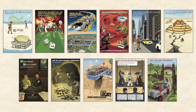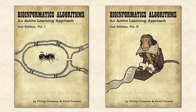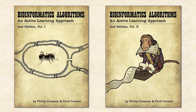Dr. Pavel Pevsner is a distinguished professor of computer science at the University of California San Diego and a leading authority on bioinformatics. He's dressed this way because he sometimes thinks that he's a sheriff of bioinformatics, a frontier discipline underpinning the digital revolution in biology and personalized medicine. Dr. Philip Campo is an assistant professor of computer science at Carnegie Mellon University. To learn why he is dressed this way, you'll need to take this course or read the textbook, Bioinformatics Algorithms: An Active Learning Approach, co-authored by the two speakers.